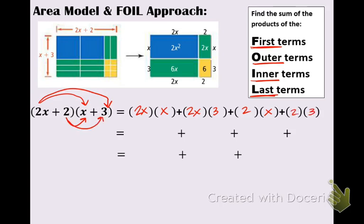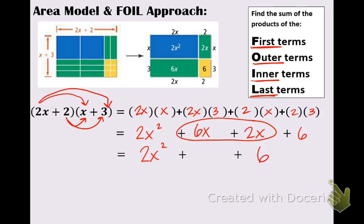Now we just need to multiply. So 2x times x is 2x to the second. 2x times 3 is 6x. 2 times x is 2x. And 2 times 3 is 6. Like I mentioned in the past, these guys are like terms. The outside terms come down and the inside terms combine to get 8x. So the answer is 2x squared plus 8x plus 6. So now the area model has been shown to you and it's also called the foil model.